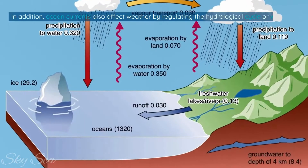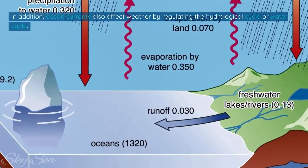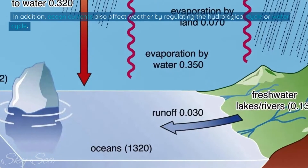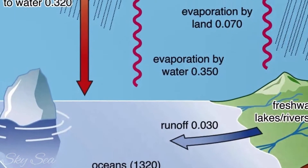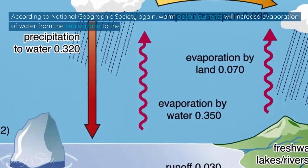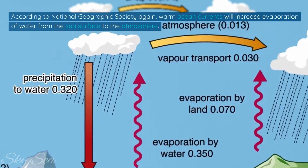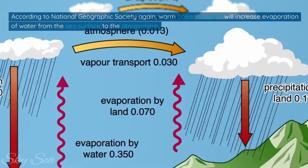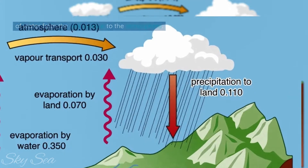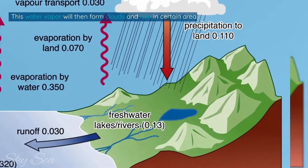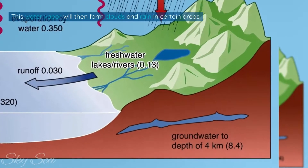In addition, ocean currents also affect weather by regulating the hydrological cycle, or water cycle. According to the National Geographic Society, warm ocean currents will increase evaporation of water from the sea surface into the atmosphere. This water vapor will then form clouds and rain in certain areas.